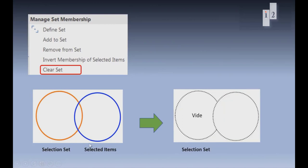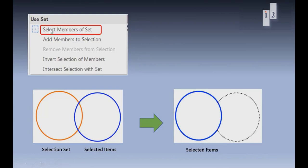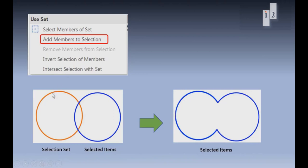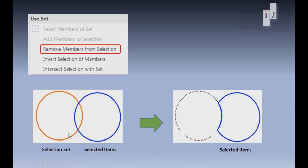Clear Set, as the name implies, will empty the selection set — you will have an empty selection set. In the Use Set part: Select Members of Set will only select the items which are part of the selection set; if there were items selected but not part of the selection set, they will be unselected. Add Members to Selection will add to the selected items all the items which are part of the selection set. Remove Members from Selection will remove from the selected items all the items which are part of the selection set — so all items both in the selection set and currently selected on the chart.